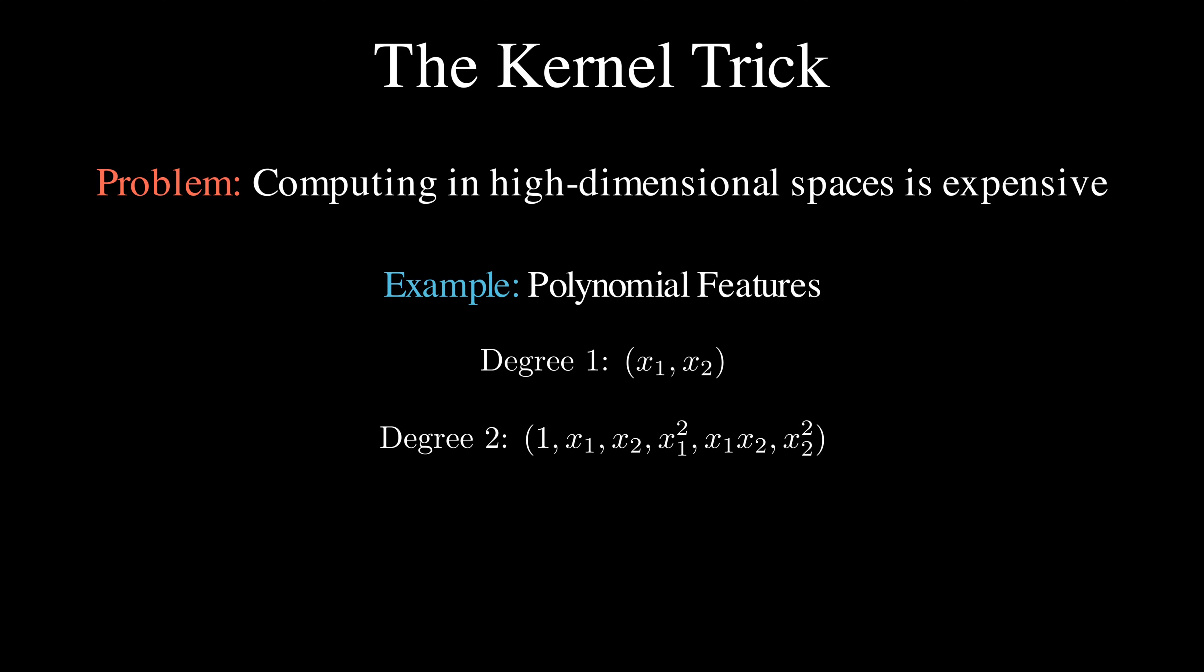We would end up with features like 1, x₁, x₂, x₁², x₁x₂, x₂², x₁³, x₁²x₂, x₁x₂², x₂³. That's already 10 dimensions, and it gets exponentially worse as the original dimension or polynomial degree increases. Computing in these high-dimensional spaces can be extremely expensive in terms of both time and memory. This is where the kernel trick comes in to save the day.